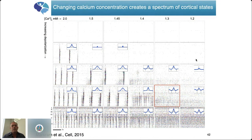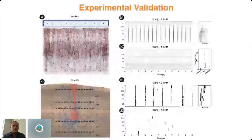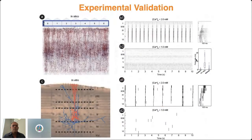At the lowest level, you see very epileptic-like activity — it's really getting hyper-excitable. We did some experimental validation of this, taking the in silico results from 2 millimolar calcium and 1 millimolar calcium and comparing them to the in vitro, and we saw very much the same transition between synchronous and asynchronous states for the cortical microcircuit.